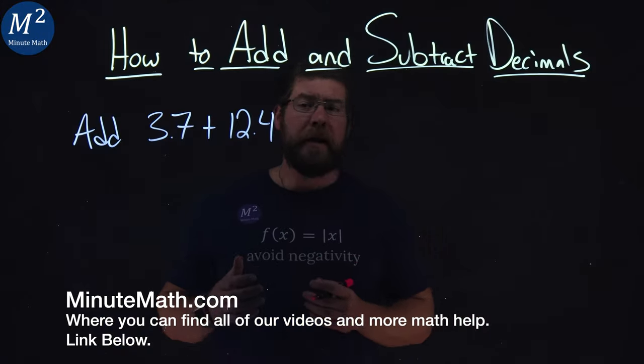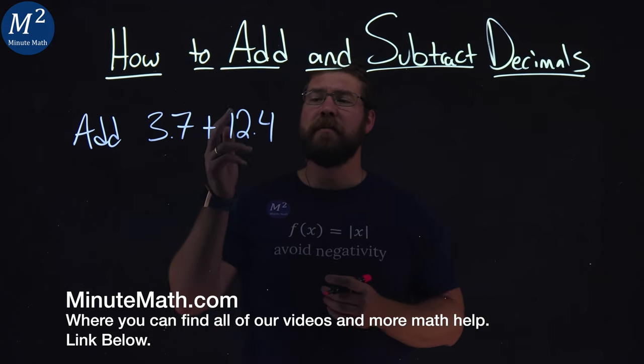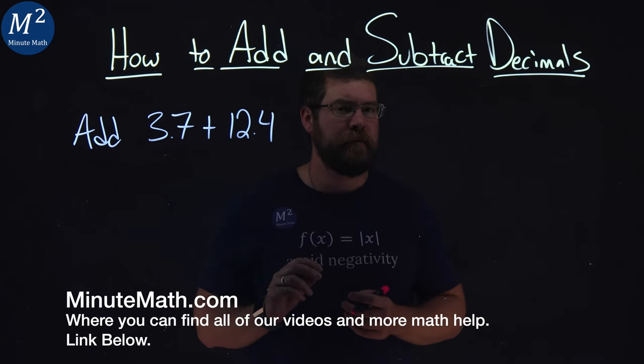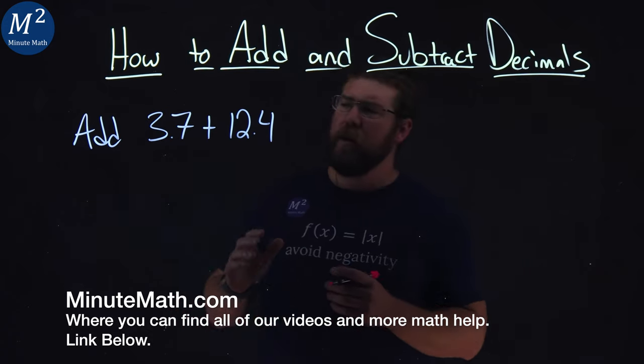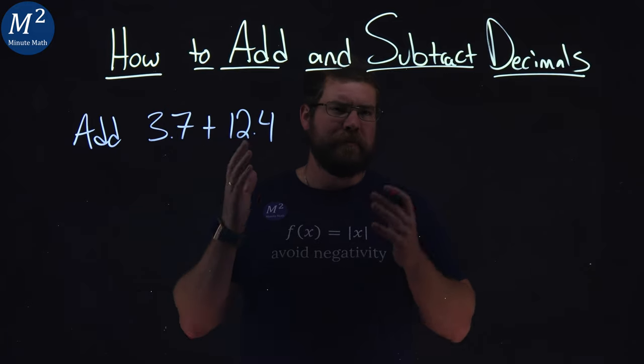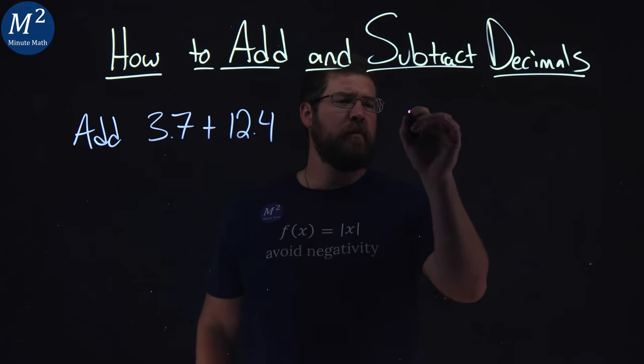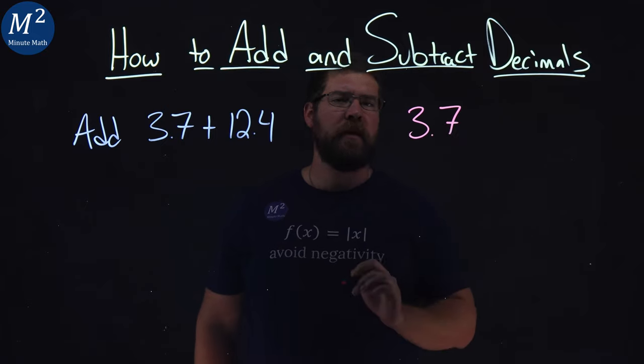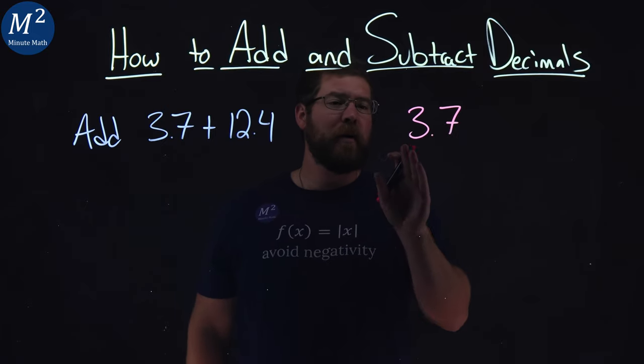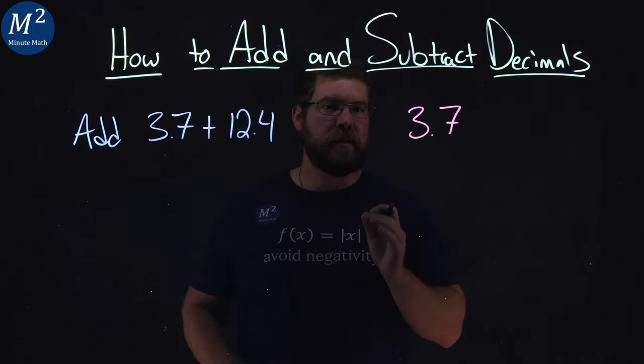We're given this problem right here, add 3.7 plus 12.4. We want to line up these two numbers vertically. Let's start with 3.7 here, and I'm going to put 12.4, but I'm going to make sure all my digits line up correctly.